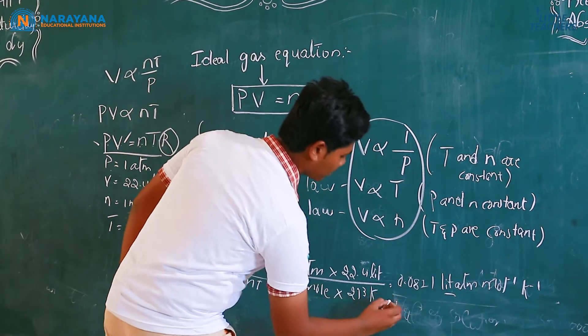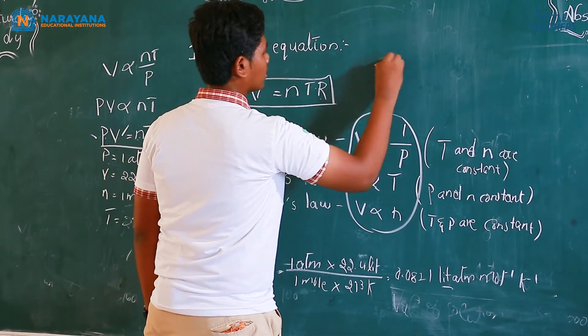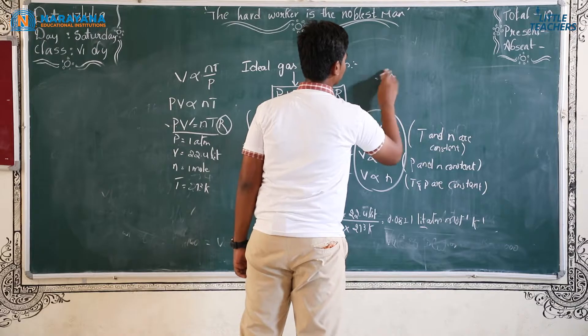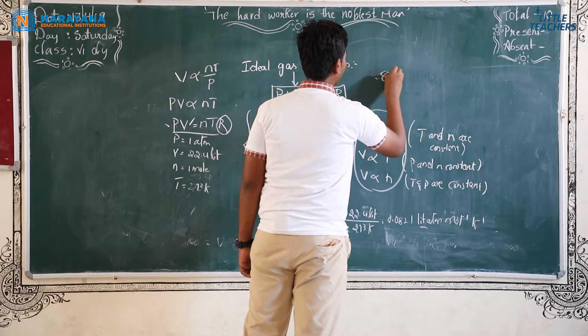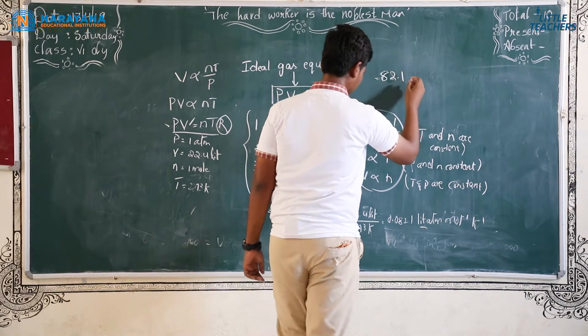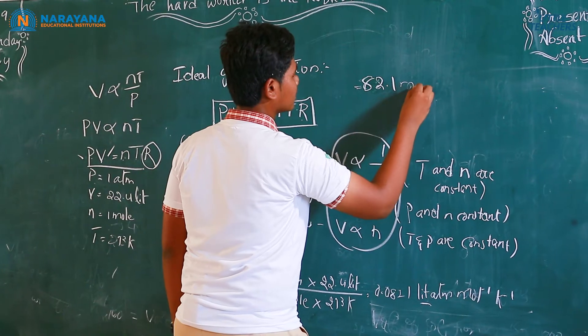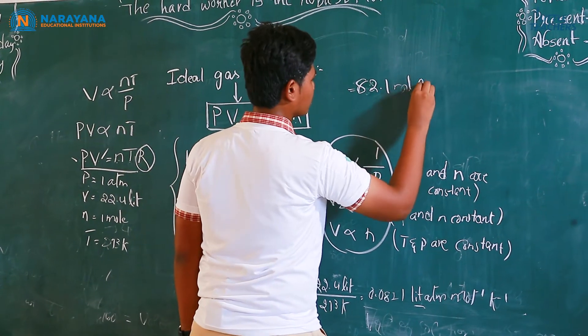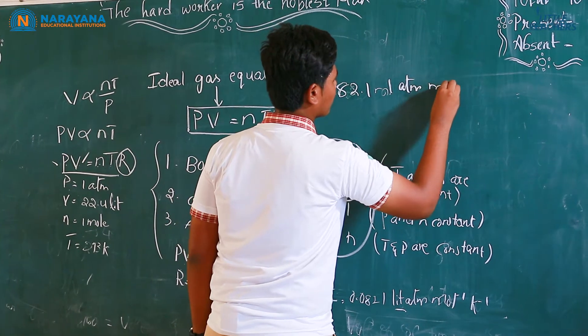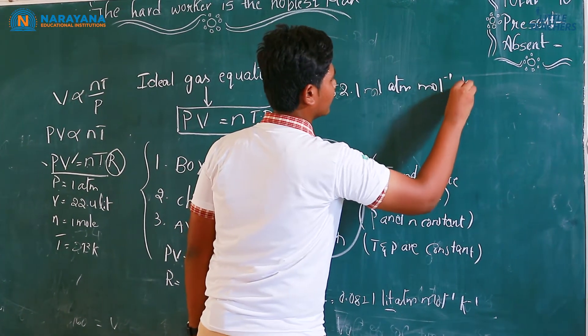So, multiply with 1000. So, we can get 82.1 milliliters atmosphere mole inverse Kelvin inverse.